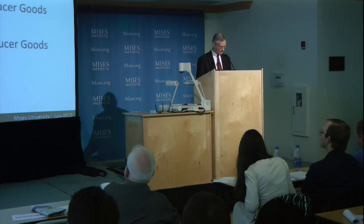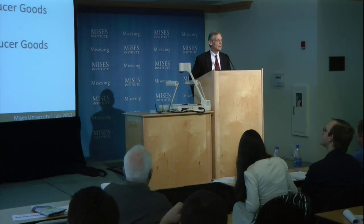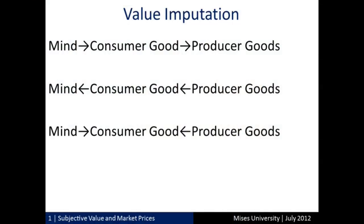This gets us to the point where we can make distinctions between the Austrian view and other views. Let's begin with the idea we call value imputation. So far we've pointed out that valuation is what we do when we make the judgment in our minds of the benefit of attaining an end. But we also know that means — objects in the world — have value as well. The question arises: where does this value come from? Why do we say that my house is valuable, my car is valuable, the food I eat today is valuable?